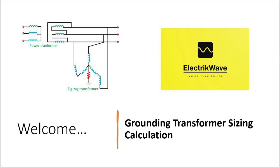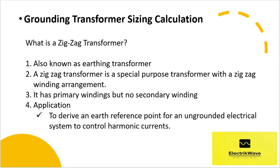Welcome. Let's see grounding transformer sizing calculation. First, let's understand what is a zigzag transformer — it is also known as an earthing transformer. A zigzag transformer is a special purpose transformer with a zigzag winding arrangement. It has primary windings but no secondary winding; however, sometimes a secondary winding is also provided for auxiliary power supply applications.